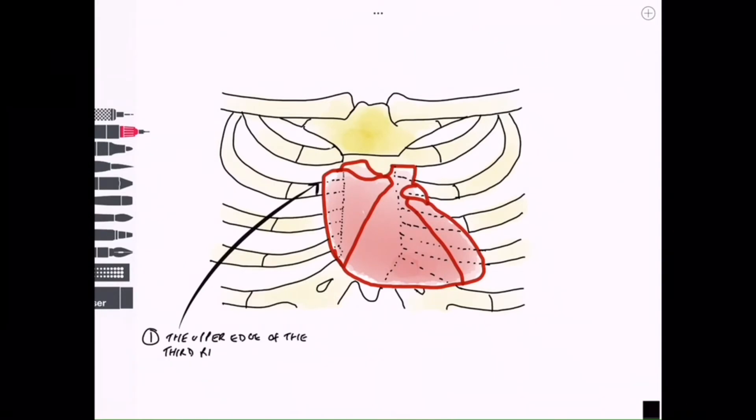We've got four borders. The first border is created by the upper edge of the third right costal cartilages, approximately about one centimeter from the sternal border. So that's point one.